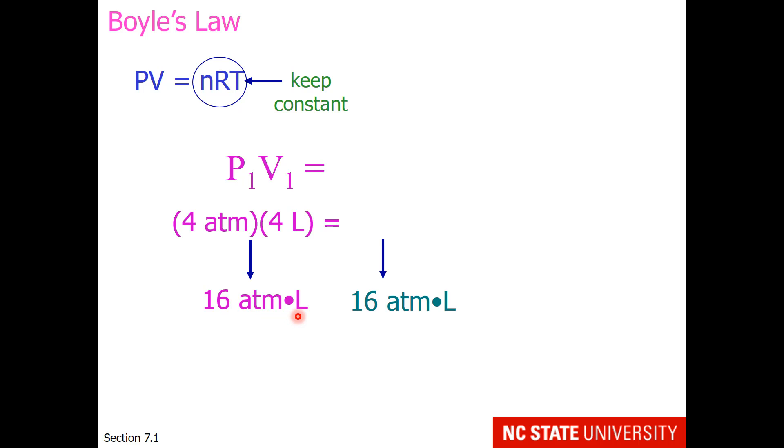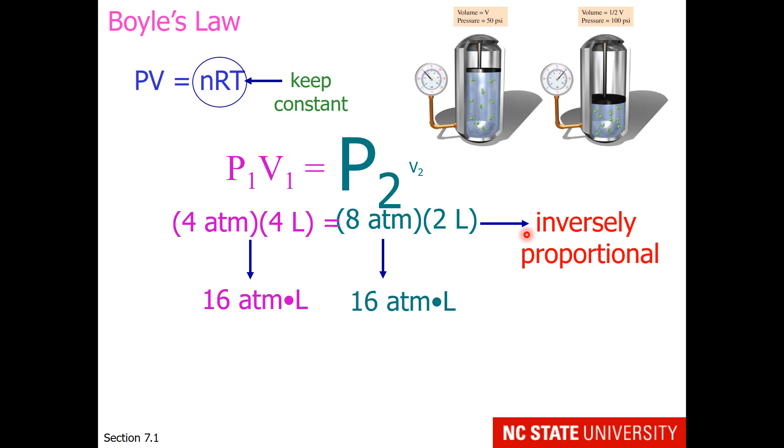This means that if the volume is changed, the pressure has to adjust so that their product is 16 atmosphere liters. So if, for example, the pressure increases to 8 atmospheres, then the volume must decrease to 2 liters. So what this means is that pressure and volume are inversely proportional. When one increases, the other one decreases.